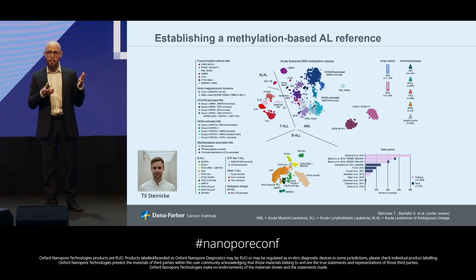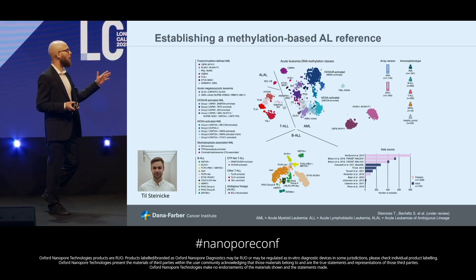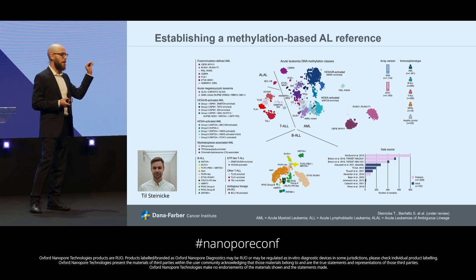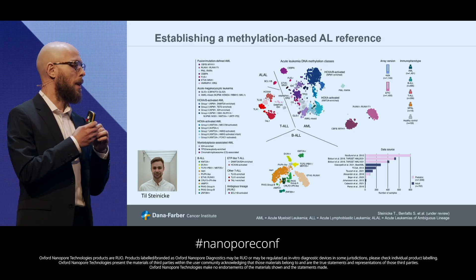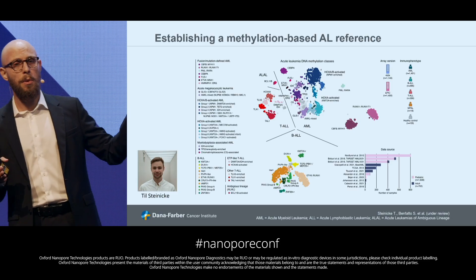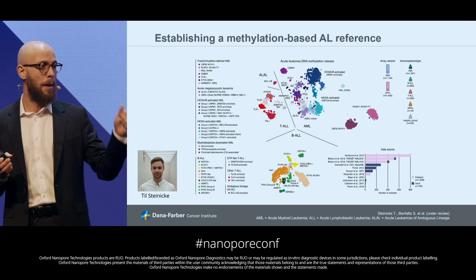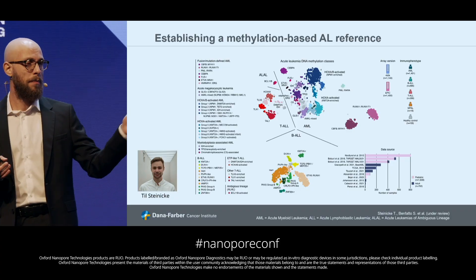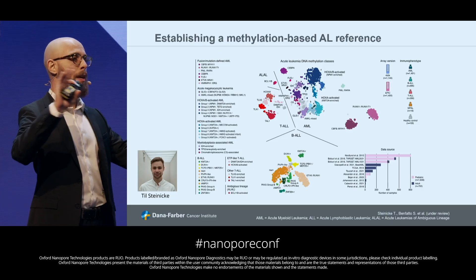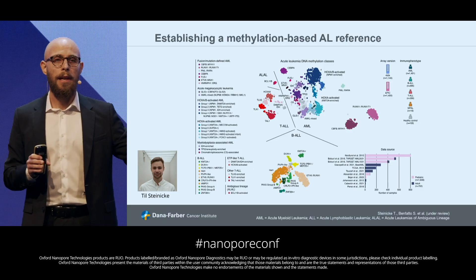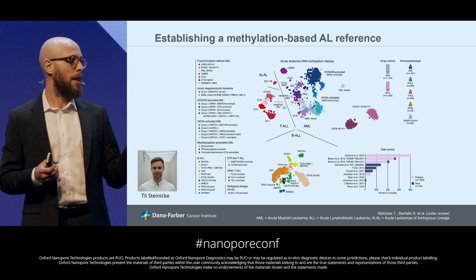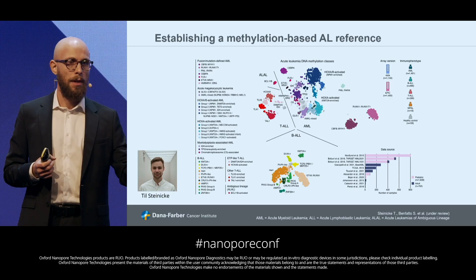The cohort is composed of both pediatric and adult cases. You can see a map of this data — more than 2,000 samples, where each dot represents a sample. With the array technology, we can profile almost half a million CpGs across the genome. Samples that are close together in this map have a similar DNA methylation profile, a similar fingerprint. We can observe that we can separate the different leukemia lineages: AML, T-ALL, B-ALL, and also acute leukemia of ambiguous lineage.